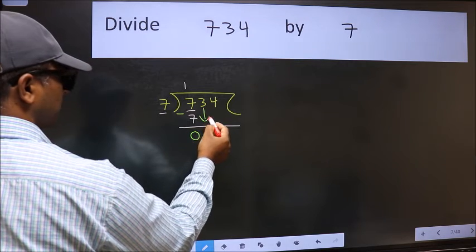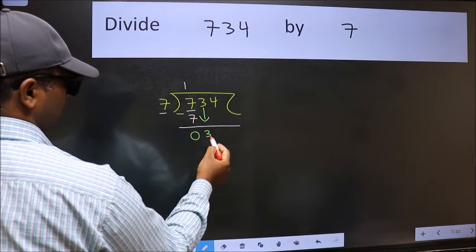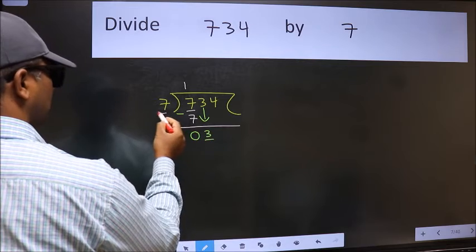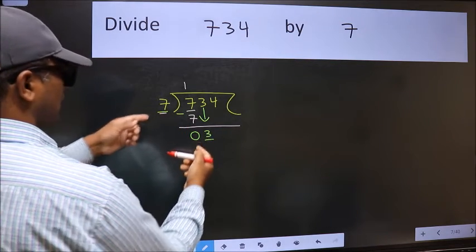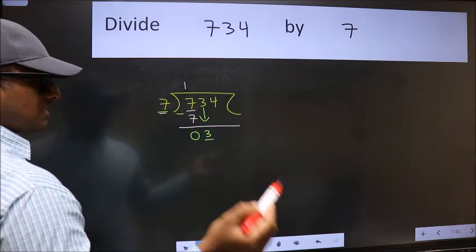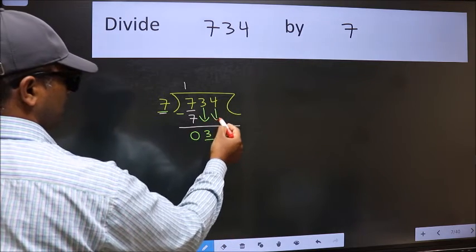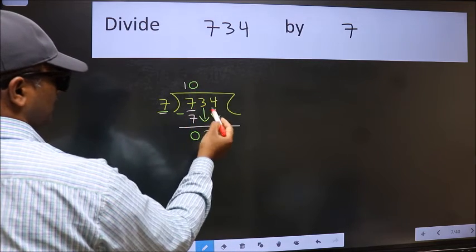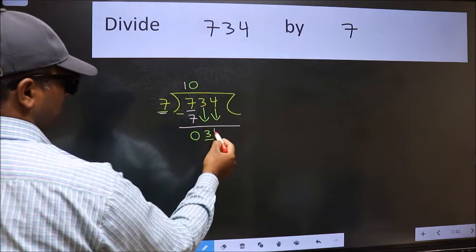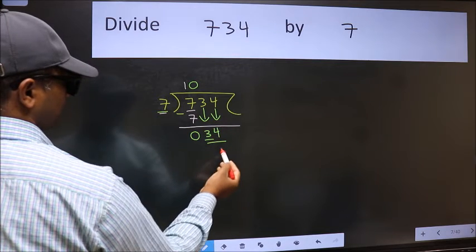After this, bring down the beside number, so 3 down. Now here we have 3 and here 7. 3 is smaller than 7, so we should bring down the second number. And the rule to bring down the second number is we should put 0 here. Then only we can bring this number down.